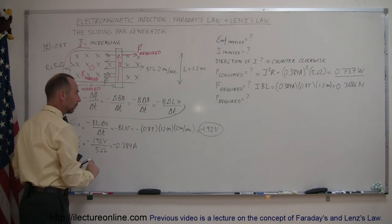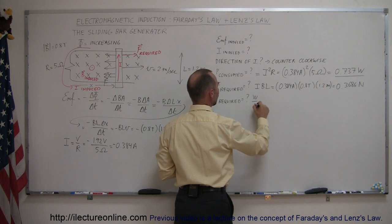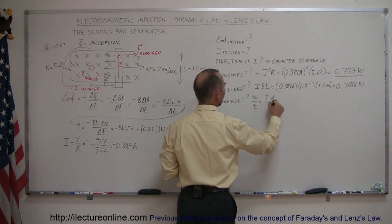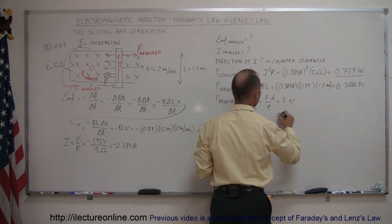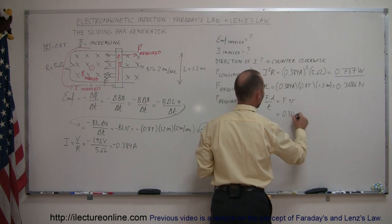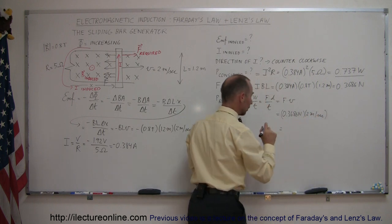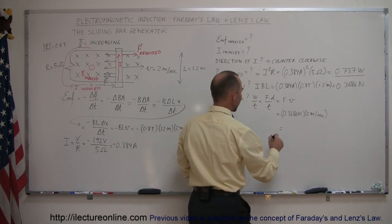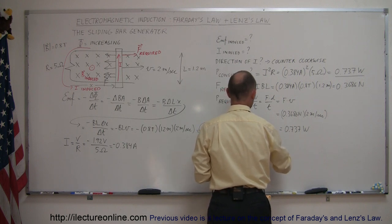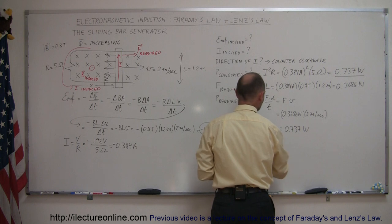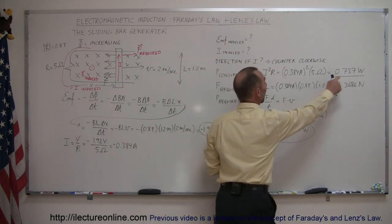Finally, the power required equals work done over time, which is force times distance over time, and distance over time is velocity — so power equals force times velocity. The force is 0.3686 newtons and the velocity is 2 meters per second, giving 0.737 watts. Notice that the power required to move the bar to the right is exactly equal to the power consumed by the resistor.